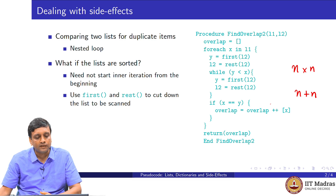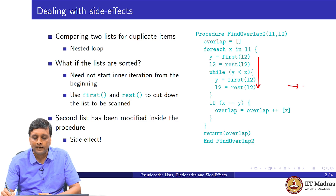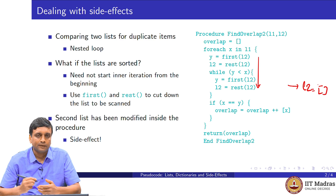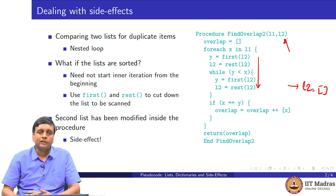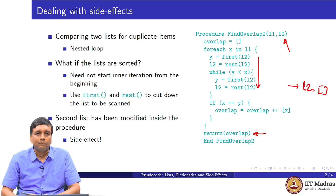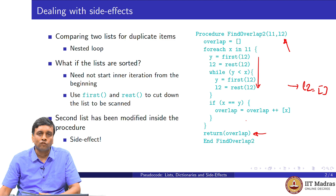The problem with this approach is that in the process, we are repeatedly replacing L2 by the rest of L2, consecutively removing the first element until L2 ends up as essentially the empty list. L2 was the argument given to us when the procedure was called. So we are unintentionally destroying the second argument while returning the overlap — and this is a side effect. Since there is no reason finding an overlap should modify the input lists, this side effect is undesirable.